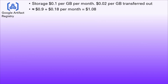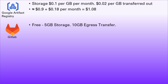The Google Artifact Registry has no free offering either. Storage costs $0.10 per gigabyte per month — similar to Amazon — but the transfer out rate is only $0.02 per gigabyte versus Amazon's $0.09. So our storage stays at 90 cents per month, but transfer out is only 18 cents per month, for a total of $1.08 — a very insignificant figure, but still not free.